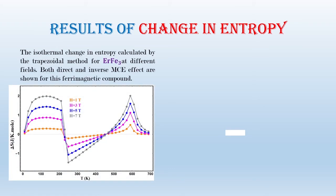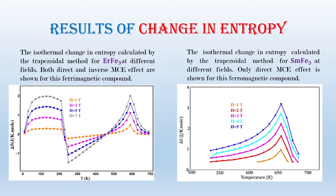Results of change in entropy. The isothermal change in entropy calculated by the trapezoidal method for erbium IR3 at different fields. Both direct and inverse magnetocaloric effect is shown for this ferromagnetic compound. The isothermal change in entropy calculated by the trapezoidal method for samarium IR3 at different fields. Only direct magnetocaloric effect is shown for this ferromagnetic compound.